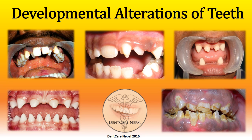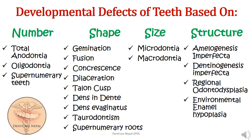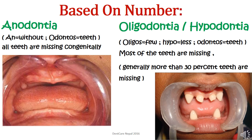Hello friends, today I'm presenting some of the developmental alterations of teeth. Developmental defects of teeth are classified based on number, shape, size, and structure. Based on number, the developmental defect can be total anodontia, oligodontia, or supernumerary teeth. Based on shape, we have gemination, concrescence, dilaceration, talon cusp, dens in dente, dens evaginatus, taurodontism, or supernumerary roots. Based on size, either microdontia or macrodontia may be present, and based on structure, amelogenesis imperfecta, dentinogenesis imperfecta, regional odontodysplasia, or environmental enamel hypoplasia can be present.